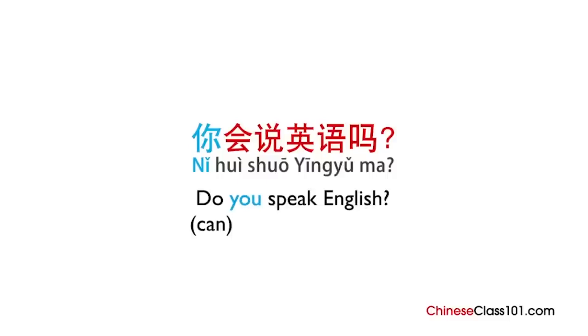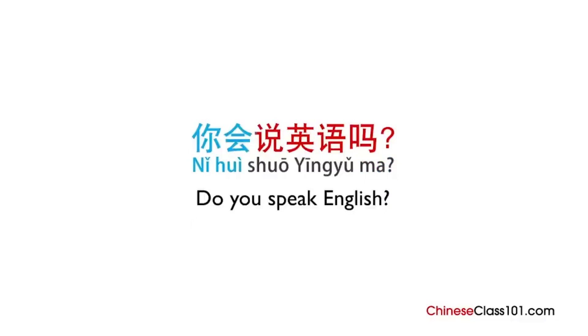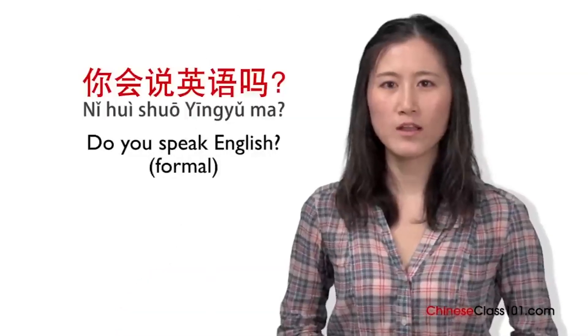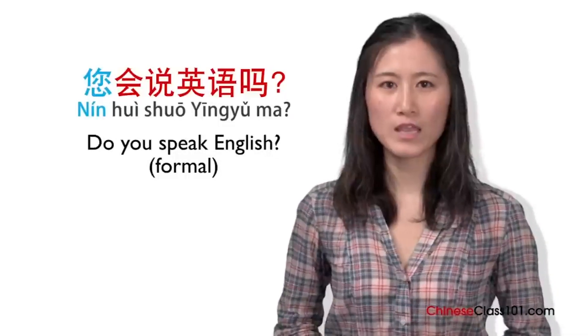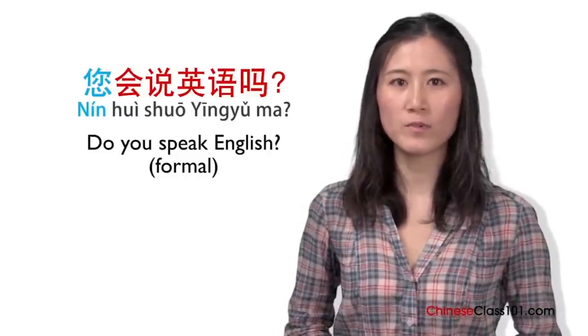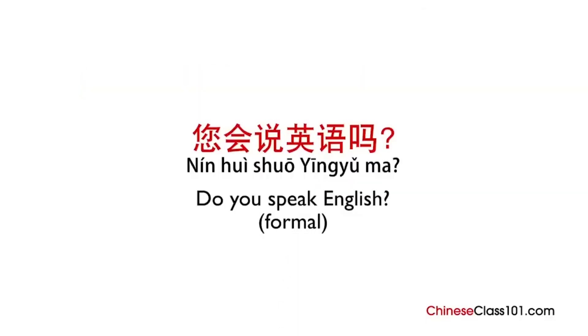You will notice 你 at the beginning of the sentence — this is the way to say 'you.' The next word 会 is like the English 'can.' Then we have the verb 说, which means 'to speak.' Next is 英语, the word for English. And last we have 吗, used to ask a question, working just like a question mark. To make the sentence formal, use the formal version of 'you': 您. Everything else stays the same — 您会说英语吗?